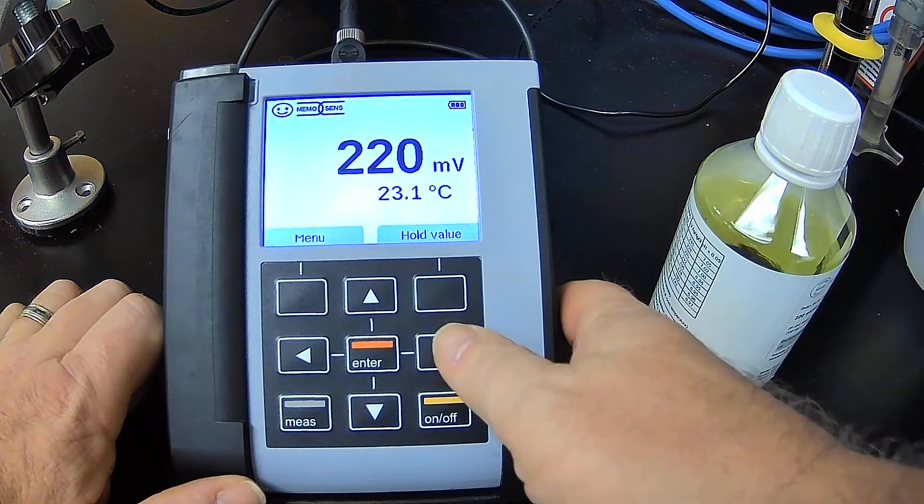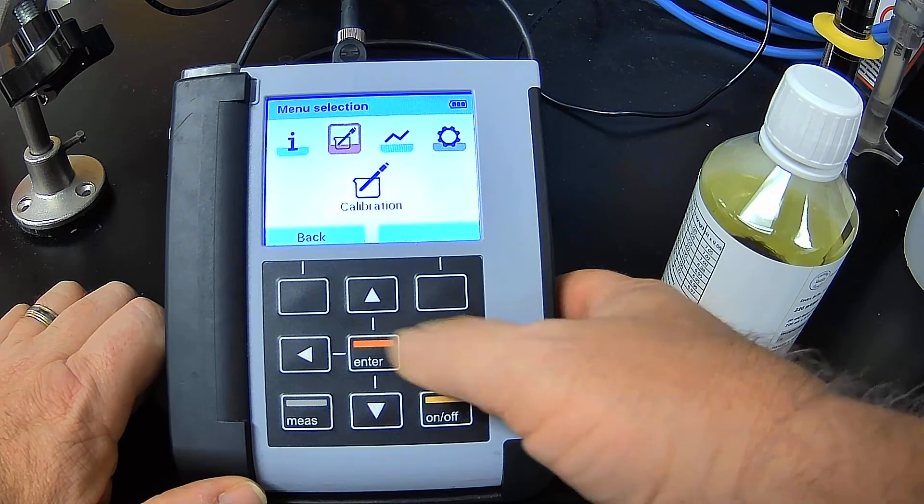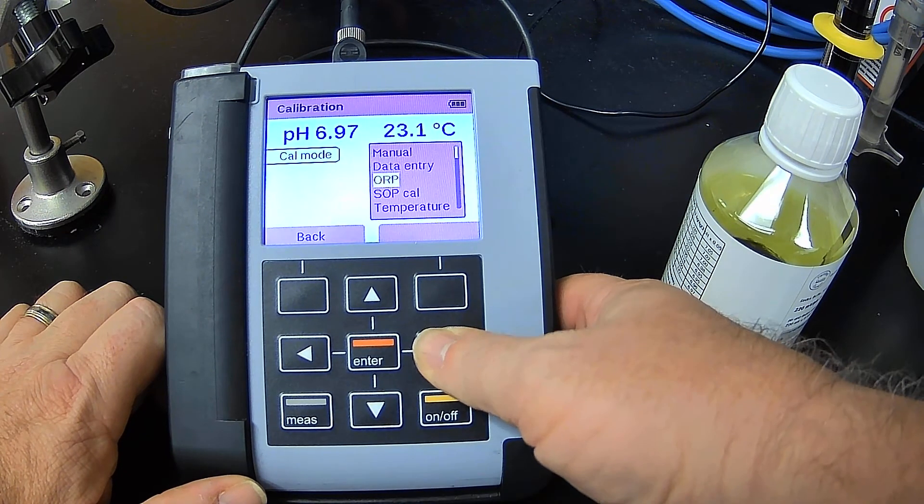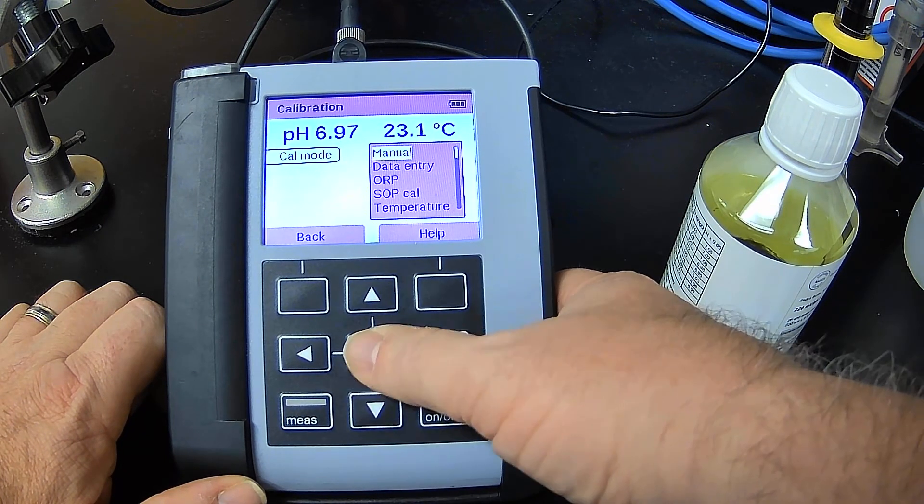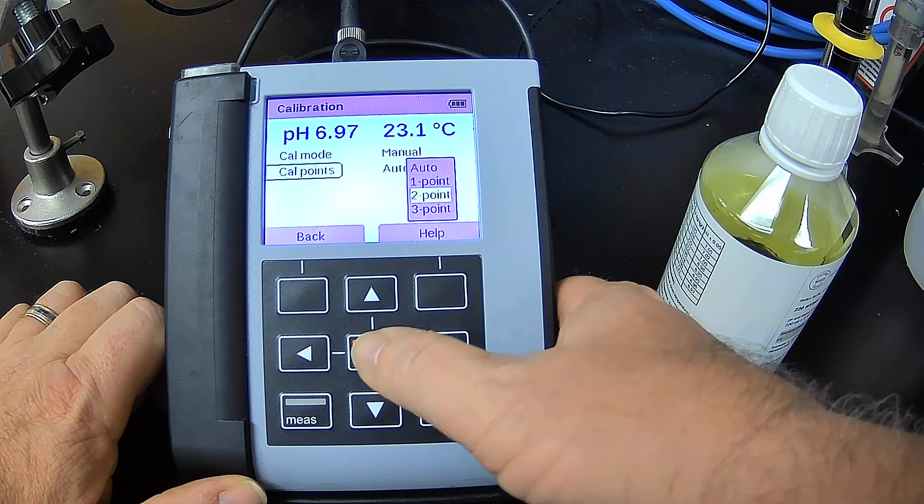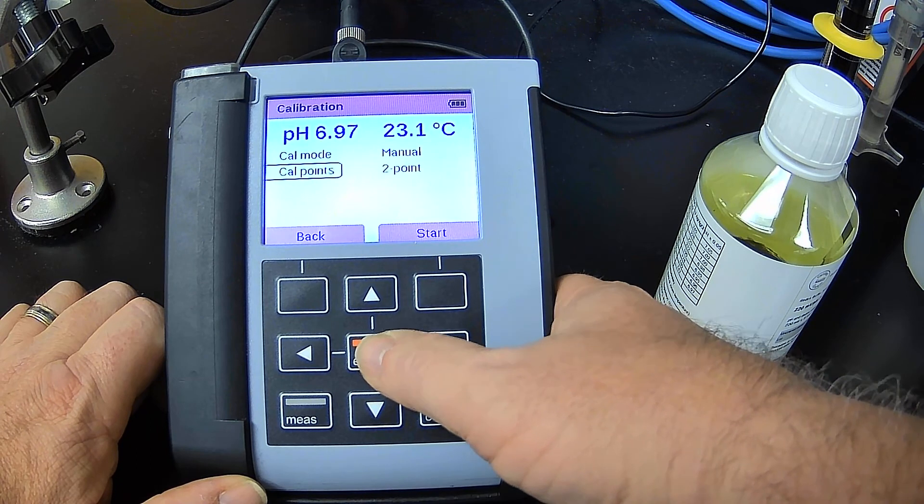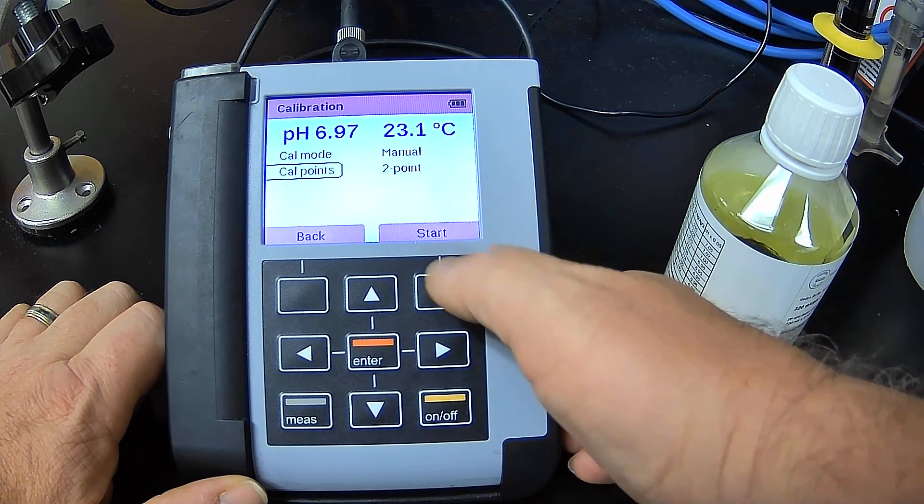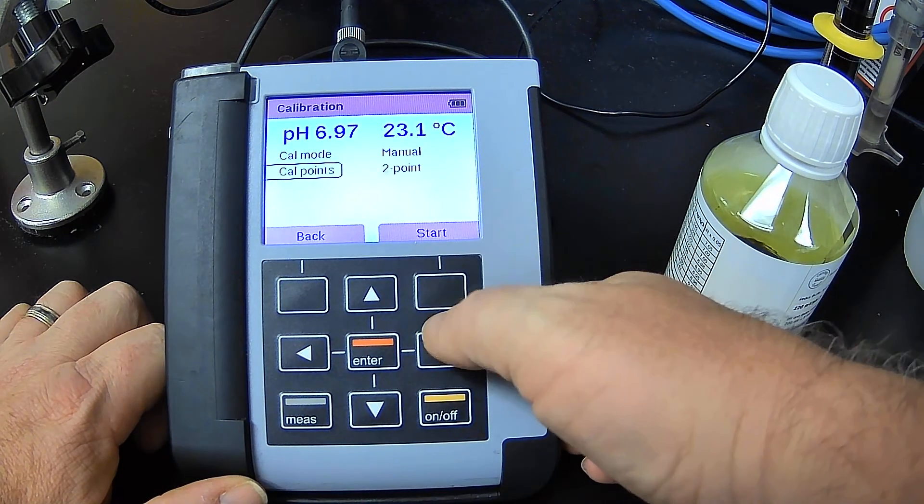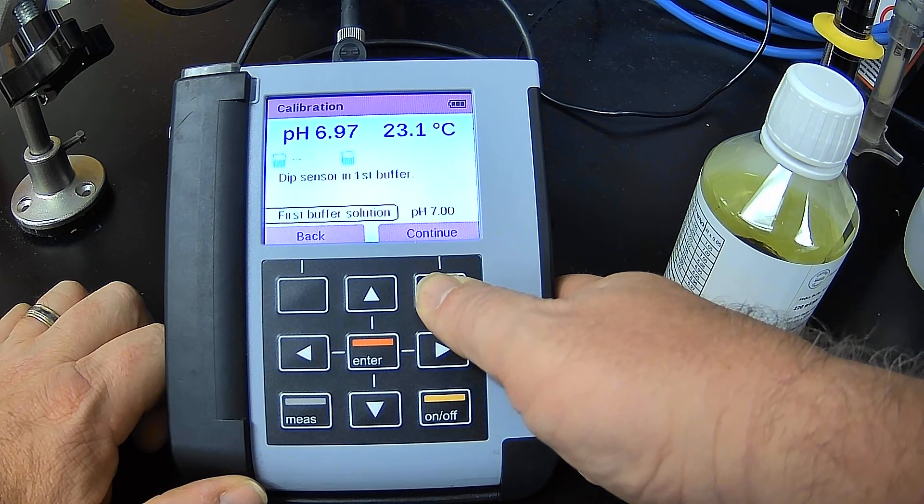So now I'm going to hit menu, calibration. I'm going to hit manual. I'm going to do two point calibration. Now I'm going to calibrate the pH side. So again, 23.1. I'm currently reading 6.97, which is pretty close. I hit start.